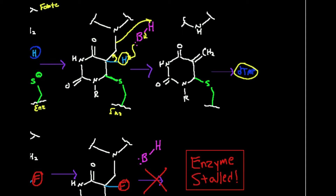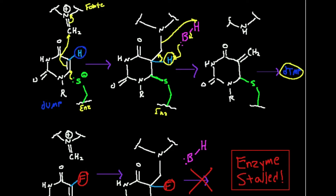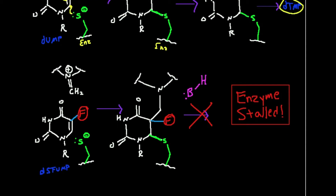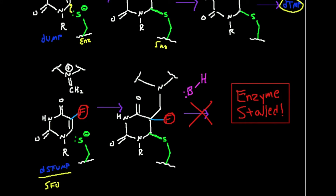That was dUMP, the normal substrate. Here's the ingenious part of this drug design: they made deoxy-5-fluoro-UMP — really administered as 5-fluorouracil but converted in the body to this active form. They knew the mechanism and that this base had to pick off this hydrogen, so they replaced the hydrogen with a fluorine. In drug synthesis, from the body's perspective, fluorine behaves a lot like hydrogen — it's about the same size — and it adds some electronic effects, but overall fluorine is a good substitute for hydrogen.